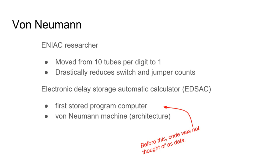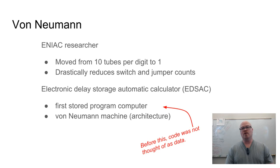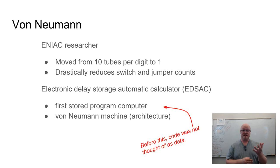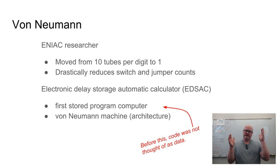John von Neumann was a researcher on the ENIAC project. One of the things he did was move the machine away from using 10 tubes per digit down to one. Before this, computers stored values in decimal form — with 10 tubes in a row, each tube could represent a different digit (0 through 9). That means for every digit, you need 10 individual tubes.